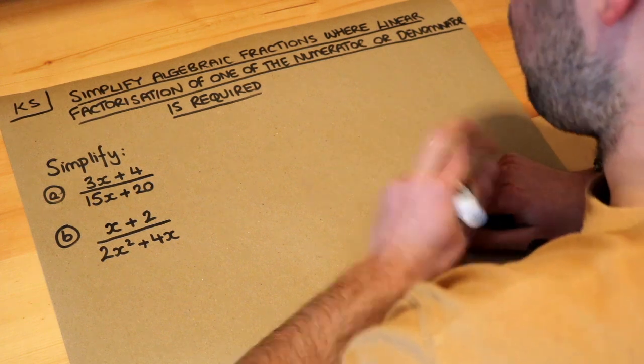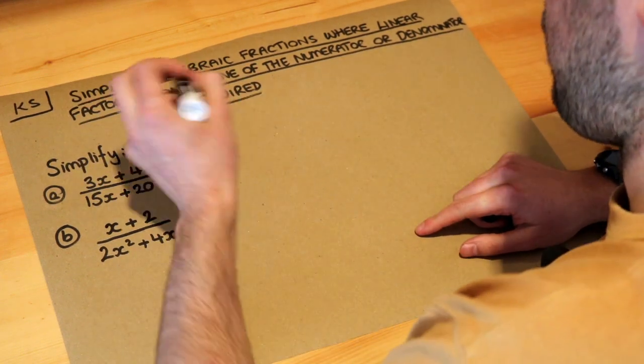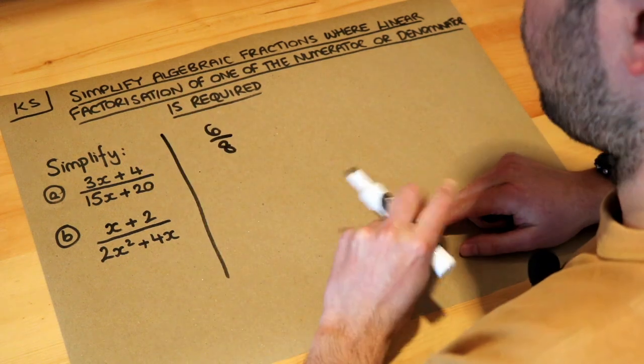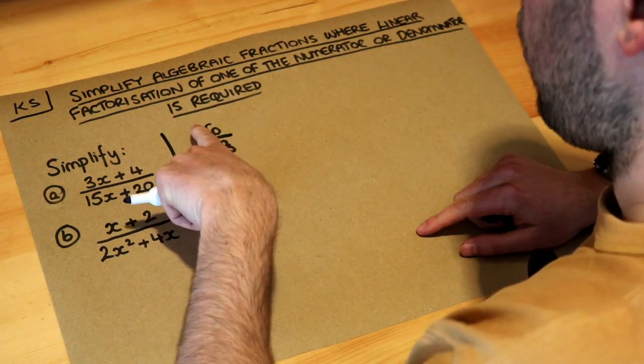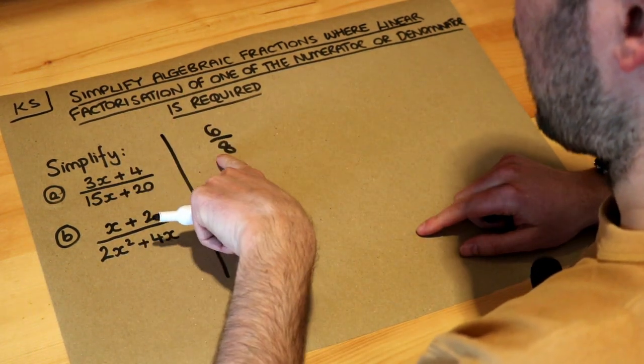Now let's just think in general how we simplify a fraction. If we had say 6 over 8, what we'd do is we look for a common factor.